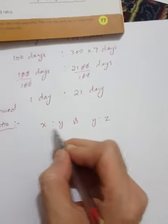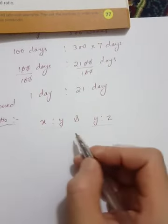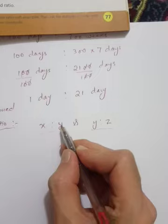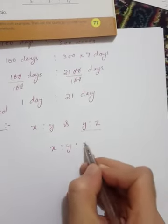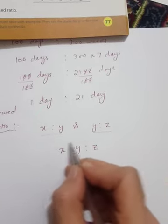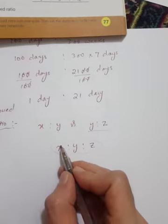We have two ratios - ratio number one and ratio number two. If we write these two ratios in the form of one ratio, with y in the middle being common, we can write this as a continued ratio.